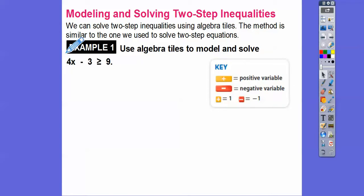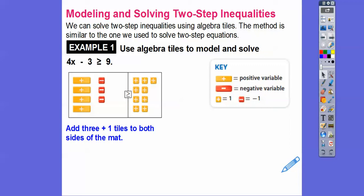There are no negative variables here, so I'm not going to worry about that. For the plus ones, we'll do nine of them on the right-hand side, and then for the minus ones, we'll do minus three of them right there. So that's what we have. Now we're going to add three plus-one tiles to both sides of the mat so that we create zeros on the left side.